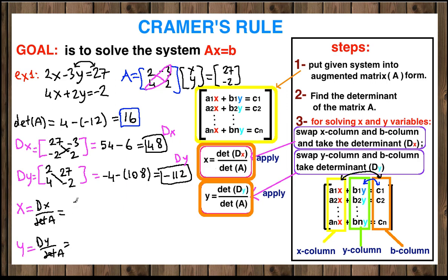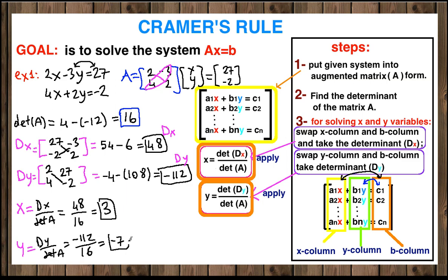DX divided by the determinant of A is 48 divided by 16, which equals 3. And DY over the determinant of A is negative 112 over 16, which equals negative 7. So (3, -7) is the unique solution to this system.